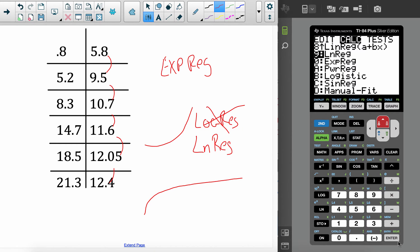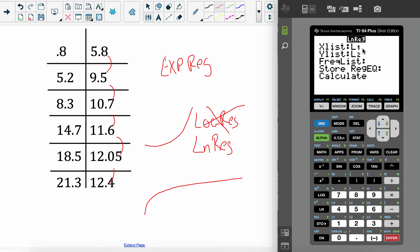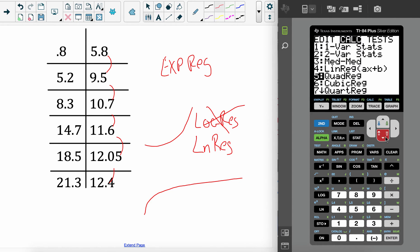So I press enter. I want to make sure my X list was L1. My Y list was L2. All right. Sometimes it's pretty powerful to store this. So I'm going to go to vars. I want a Y variable. I want to store it in my Y variables. So I'm going to go over to Y variables. This is a function. And we'll put it in Y1. And then I'm going to, last but not least, I'm going to come down. Come on. Go down. Press enter.